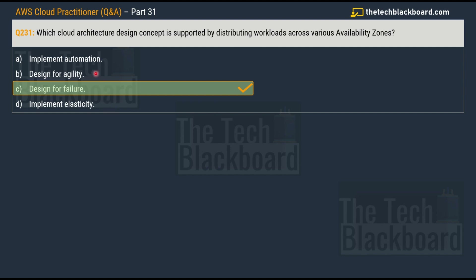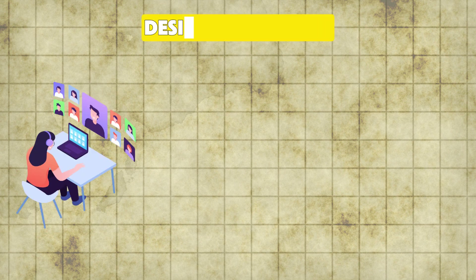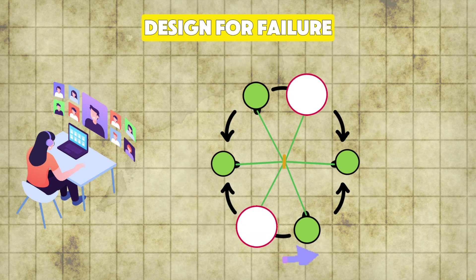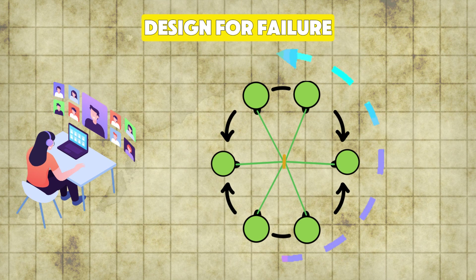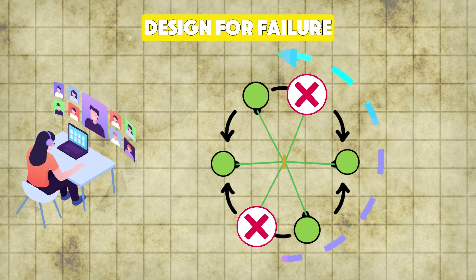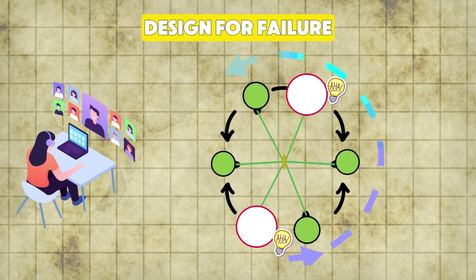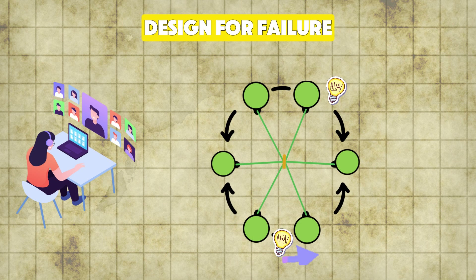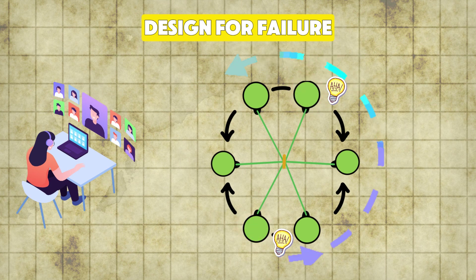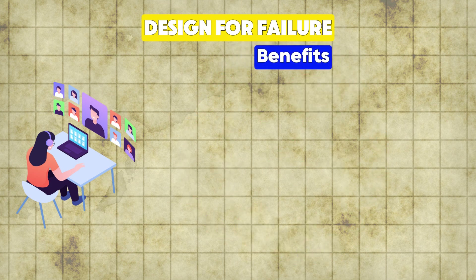Design for failure is a fundamental principle in cloud architecture that emphasizes building systems with the expectation that components will inevitably fail. Rather than striving for perfection, the focus is on creating applications or systems that can gracefully handle these failures without causing significant disruption to overall operations. The key ideas are: anticipate the failure, build redundancy, implement fault tolerance, test failure scenarios, and code your system to handle failures gracefully.